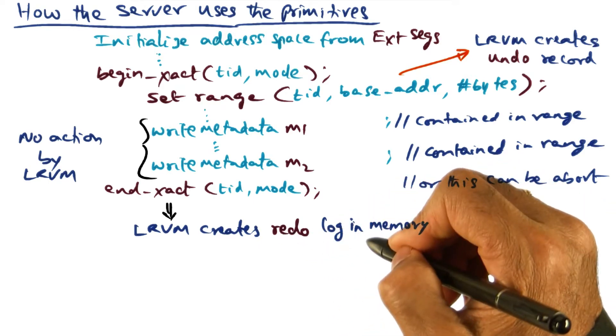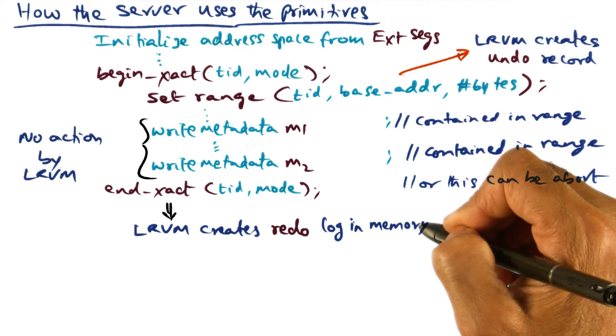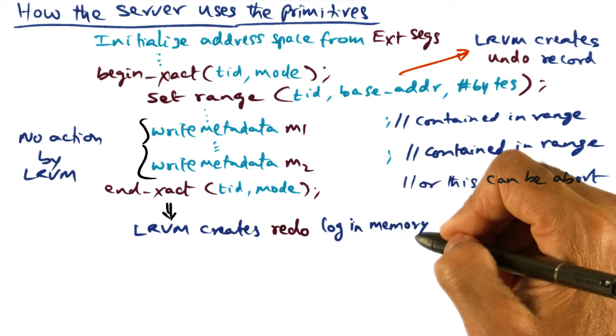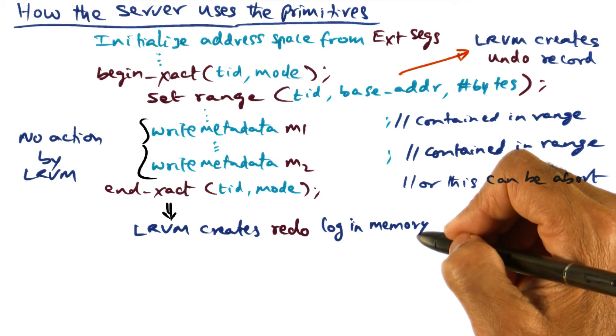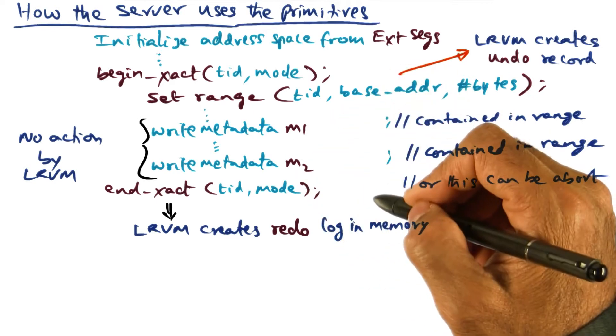Remember that redo log is itself a data structure of LRVM in memory. We should not confuse the redo log with the external data segments. External data segments are the persistent versions of the in-memory data structures.